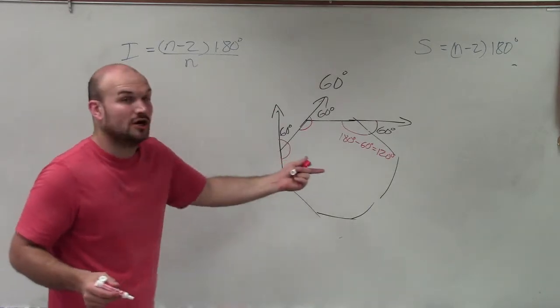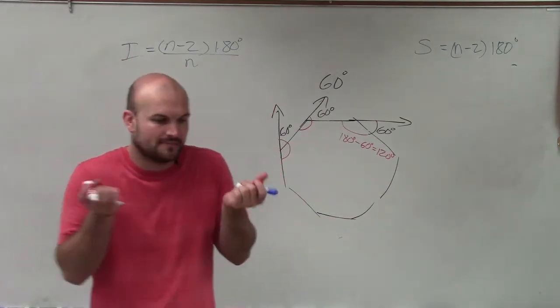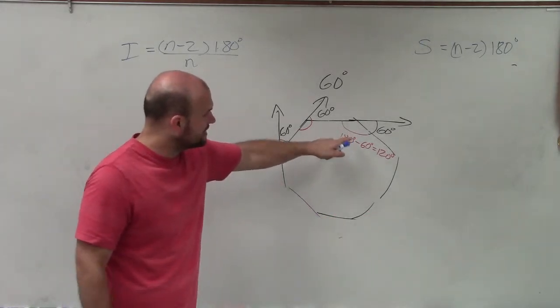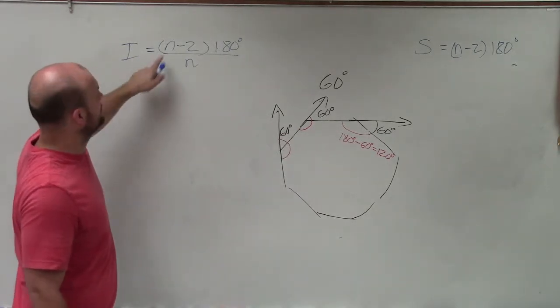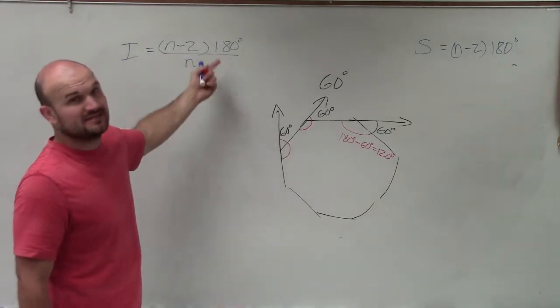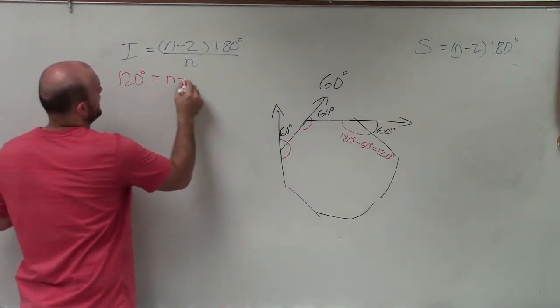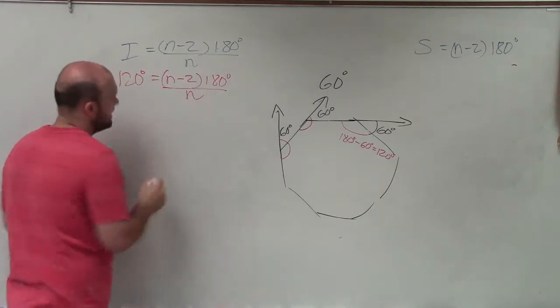That means the interior angle of this regular polygon is 120 degrees, because it has to be regular when we're dealing with our individual exterior interior angles. So I know that the formula for an interior angle is the number of sides minus 2 times 180 divided by the number of sides. So I can say 120 degrees equals n minus 2 times 180 degrees divided by n.